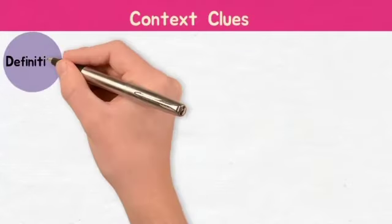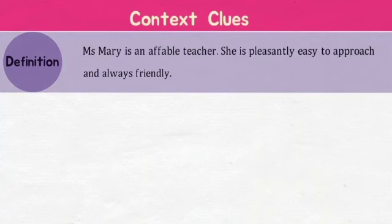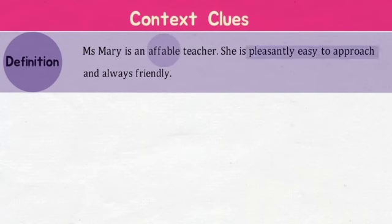Let's focus on the first one: definition. Sometimes we can find that the definition of a word is right there. For example, 'Ms. Mary is an affable teacher. She is pleasantly easy to approach and always friendly.' In this sentence, we can see that the meaning of the word 'affable' is given in the following sentence. So now we learn that affable means approachable and friendly.